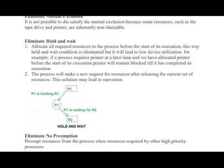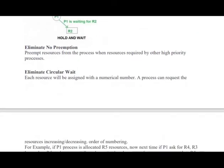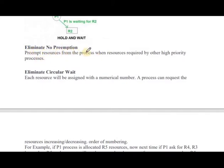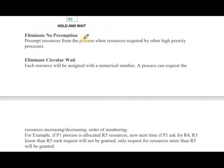Eliminate no preemption. Preemption means that a higher priority process can preempt a lower priority one and take the CPU. To eliminate no-preemption, support preempting resources from a process when those resources are required by higher priority processes.